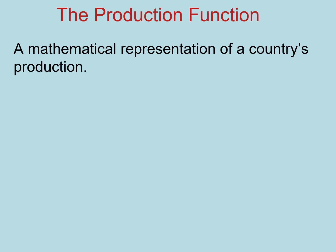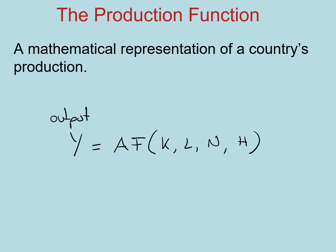Our production function is going to be Y, output, equals total factor productivity times a function of inputs: capital, labor, natural resources, and human capital. We're establishing a relationship between our output, which in this case is GDP, and our inputs, which in this case are the factors of production.